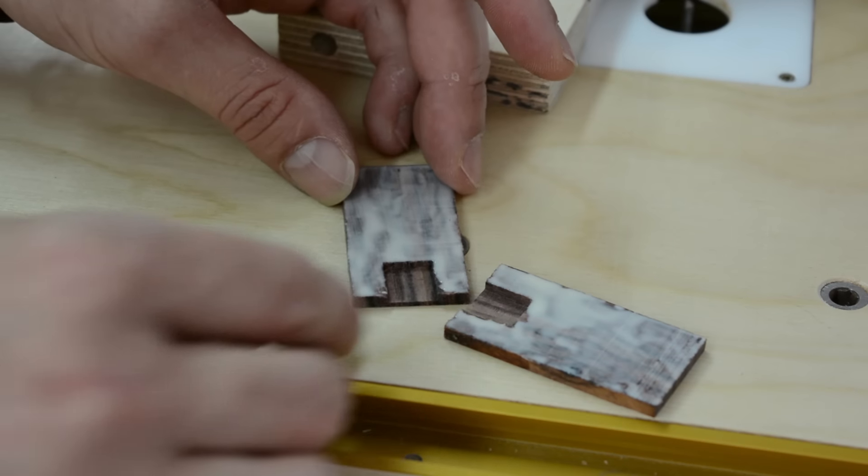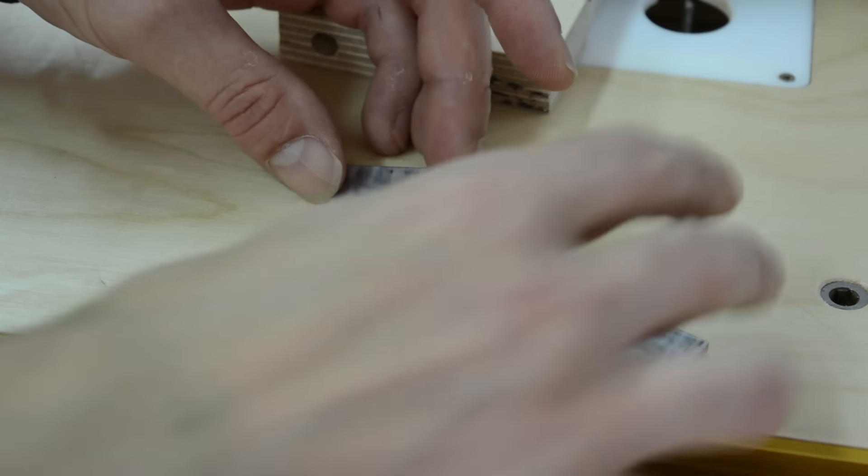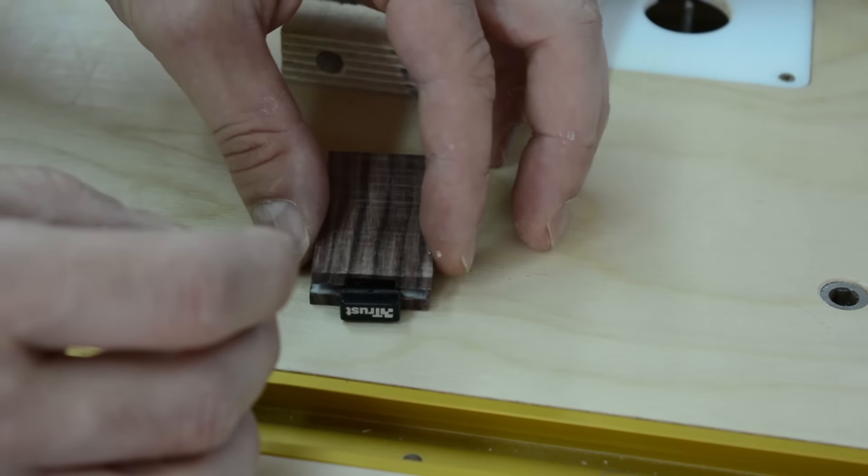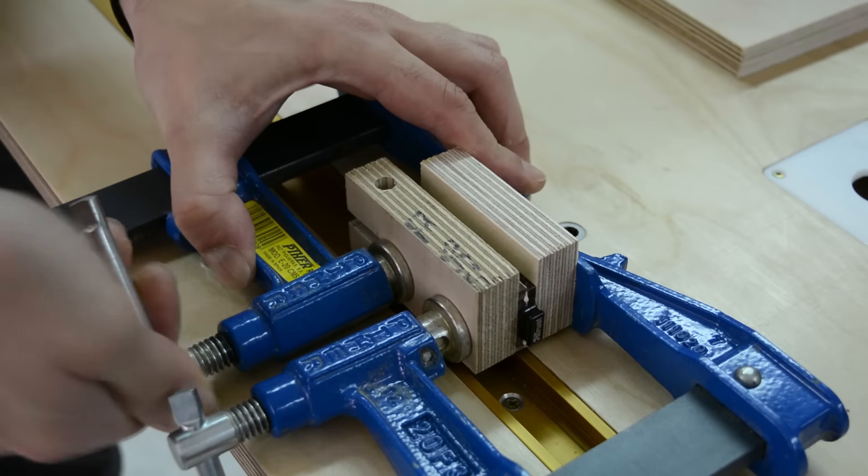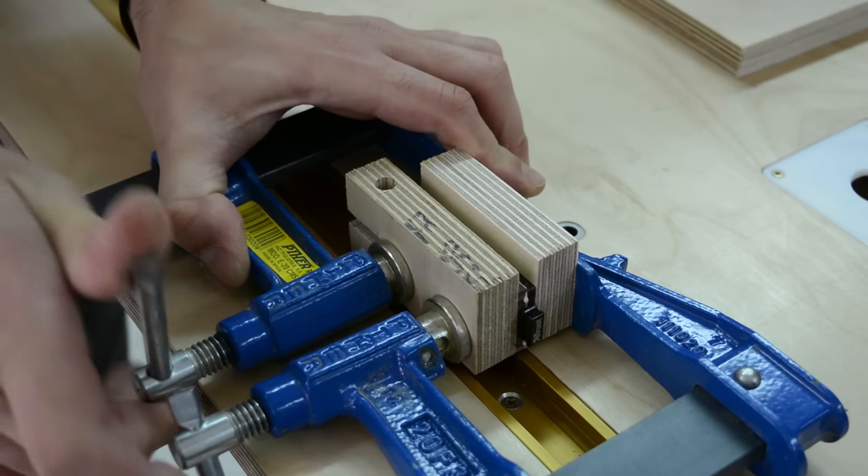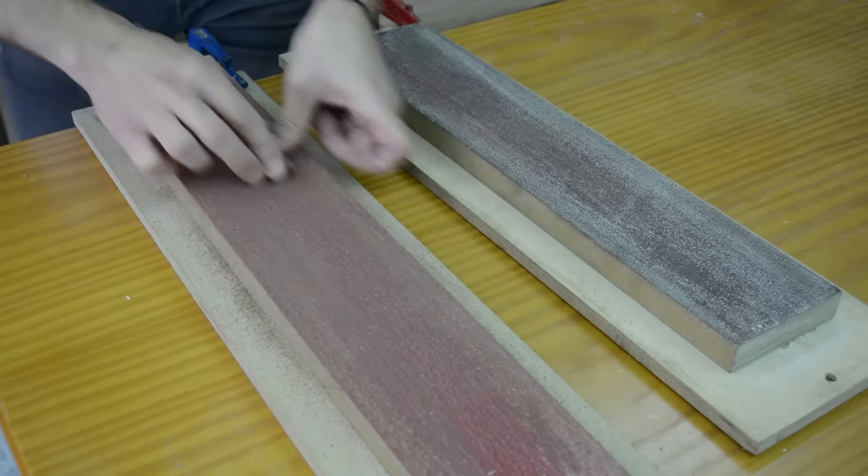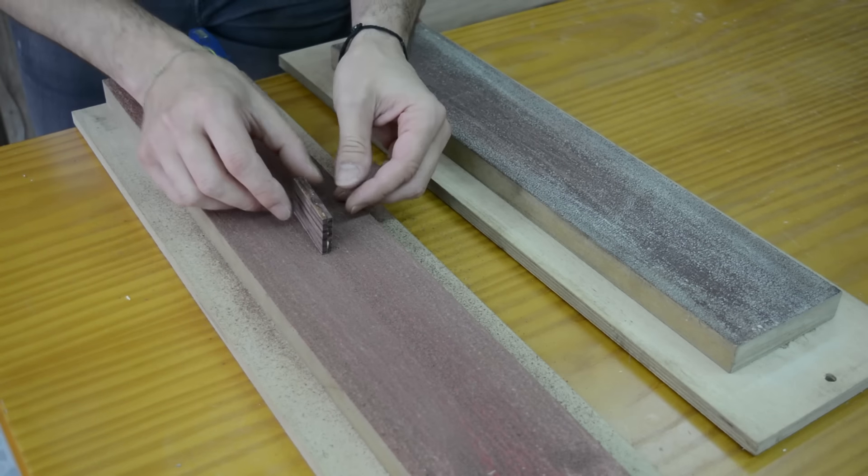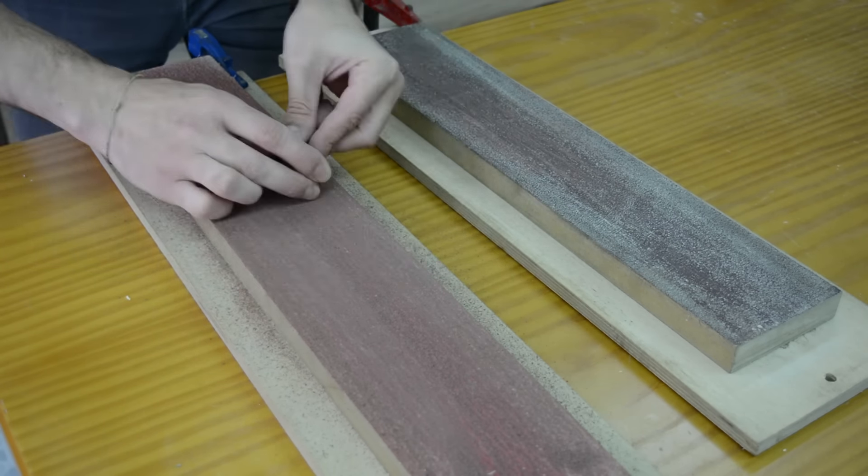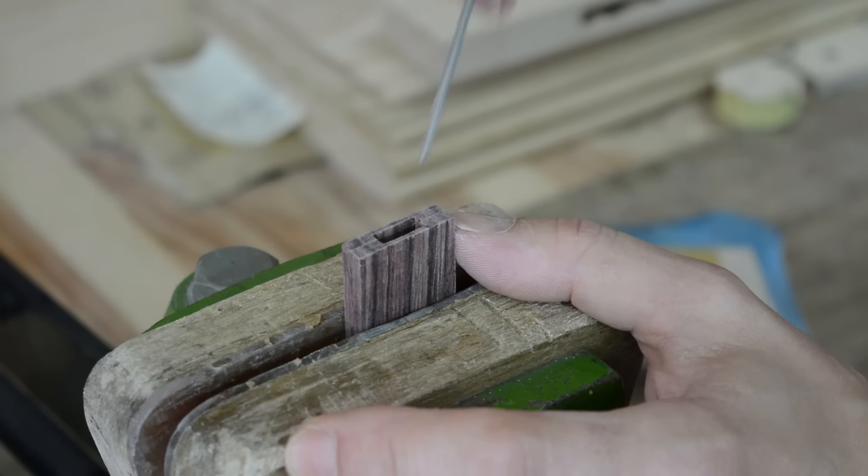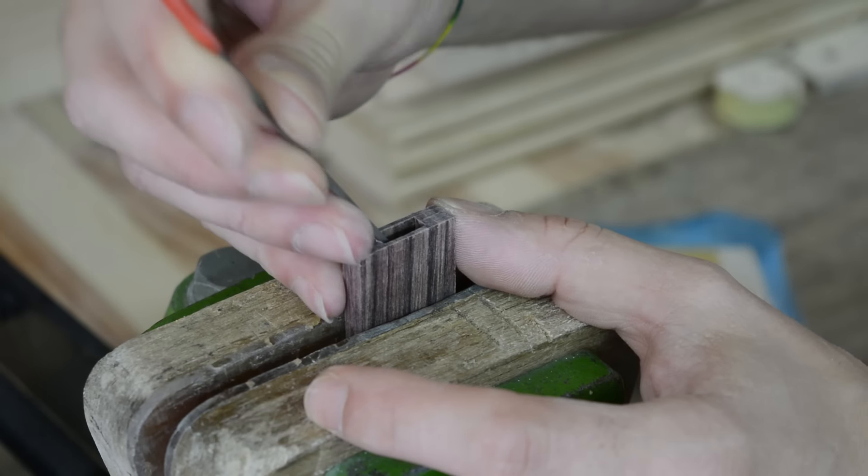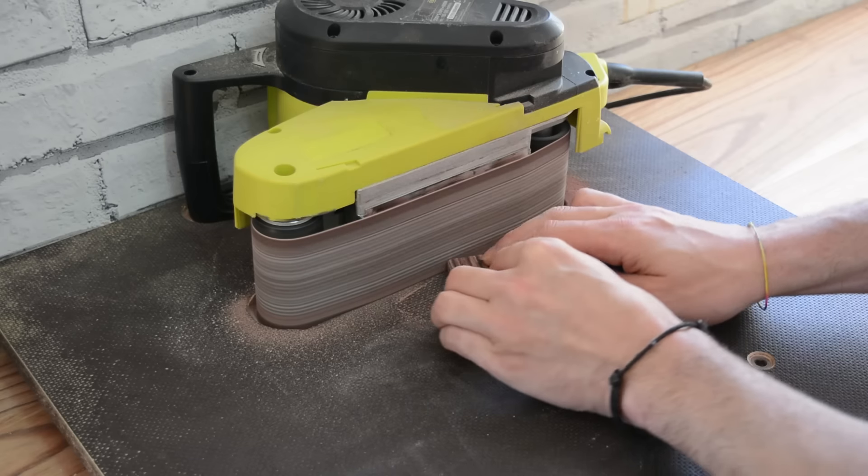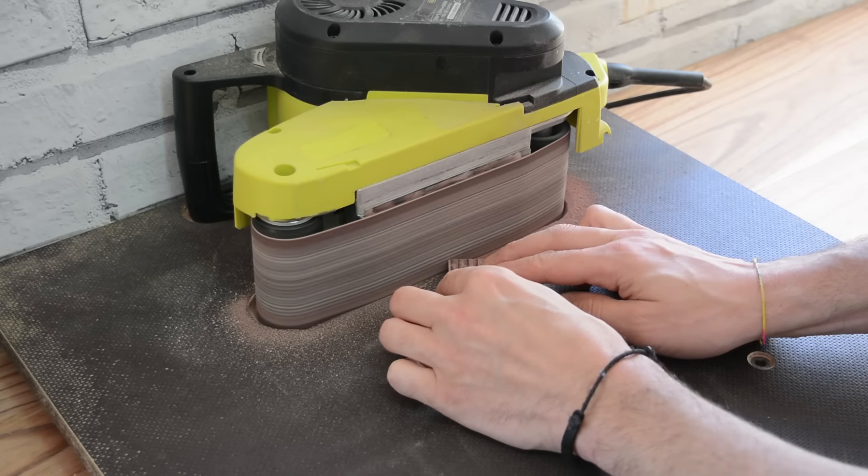Now we are ready to glue the pieces. Once dry, we'll sand the entire piece. Now we'll smooth out the corners with a belt sander.